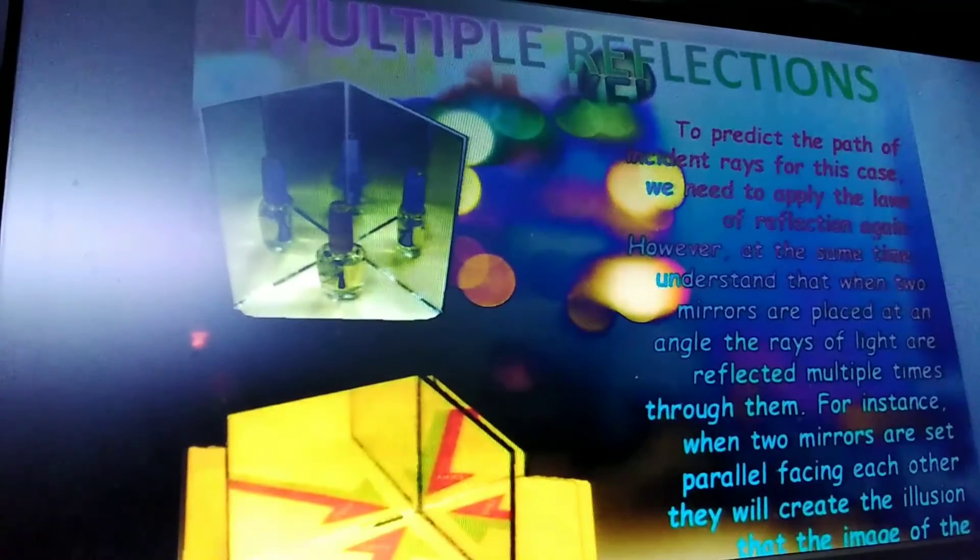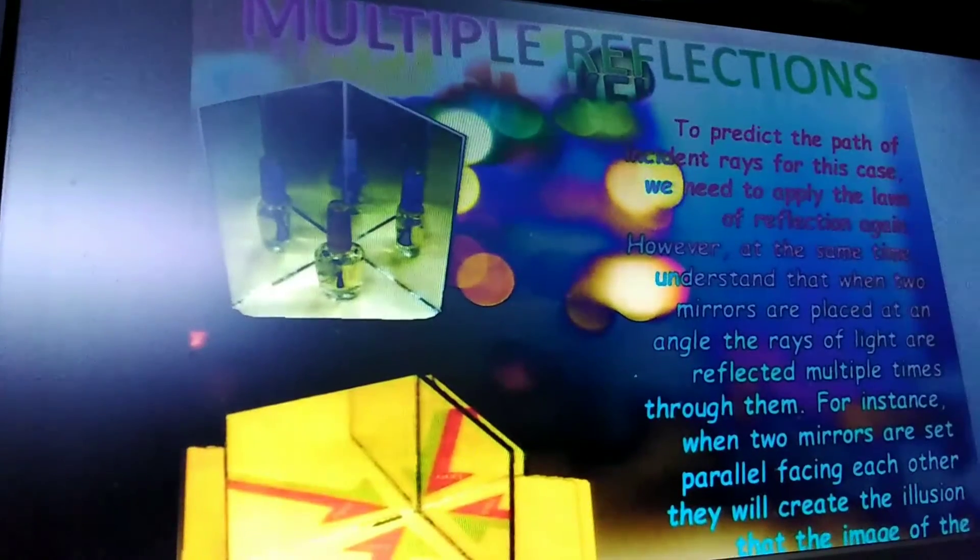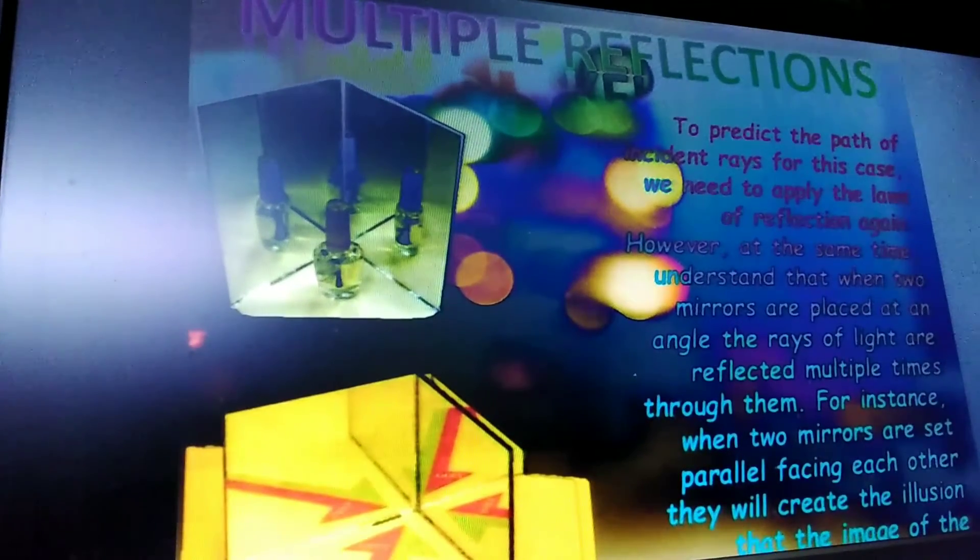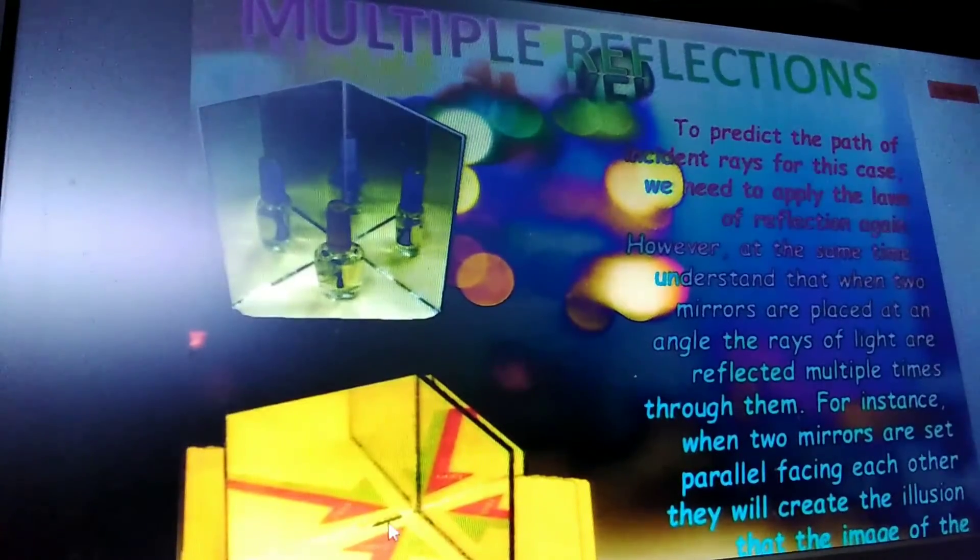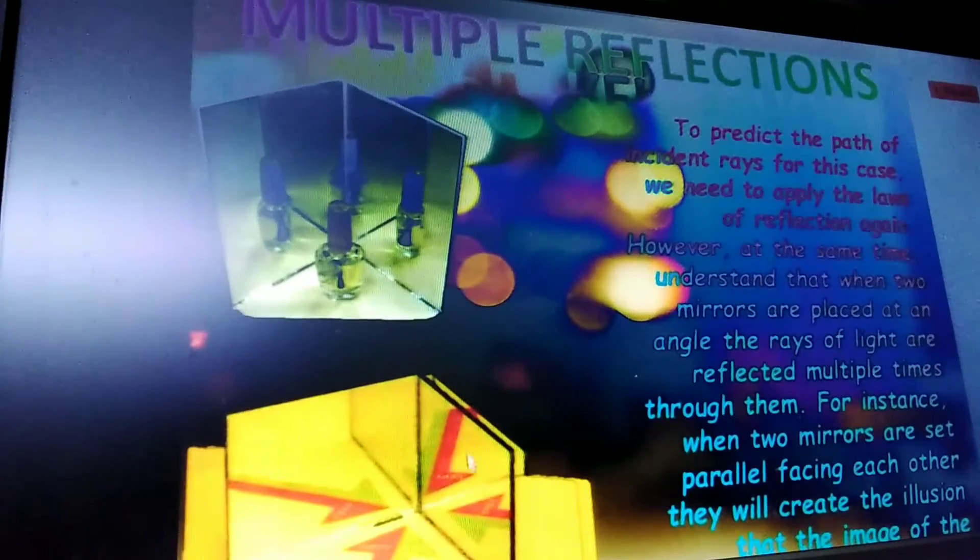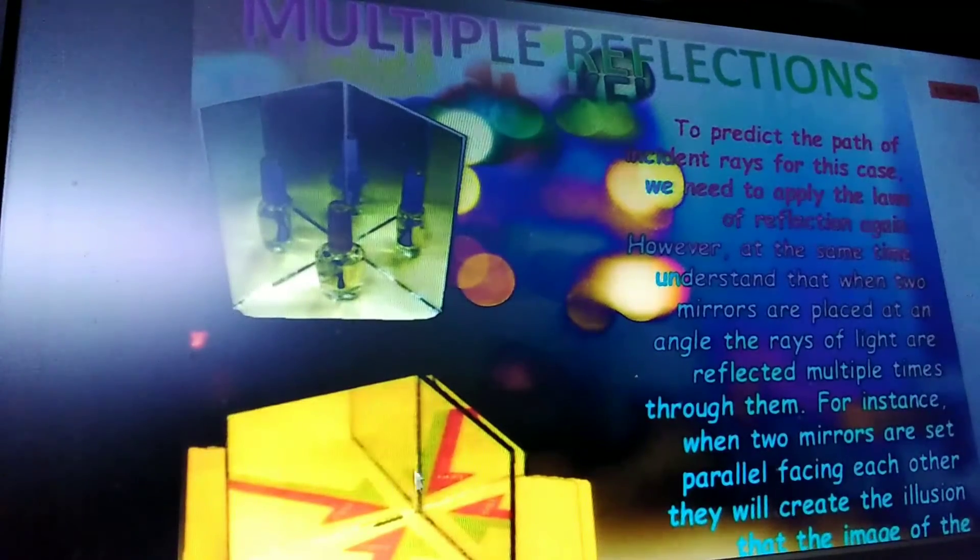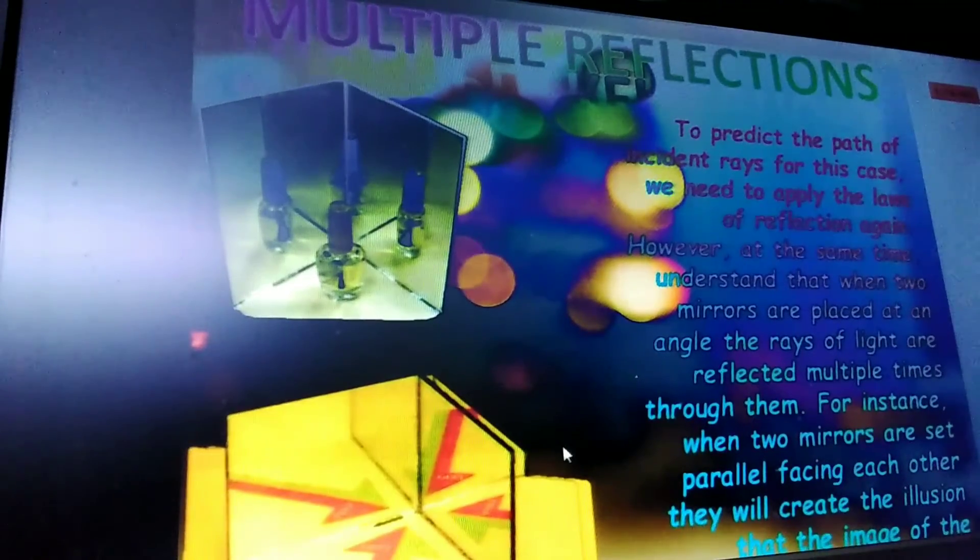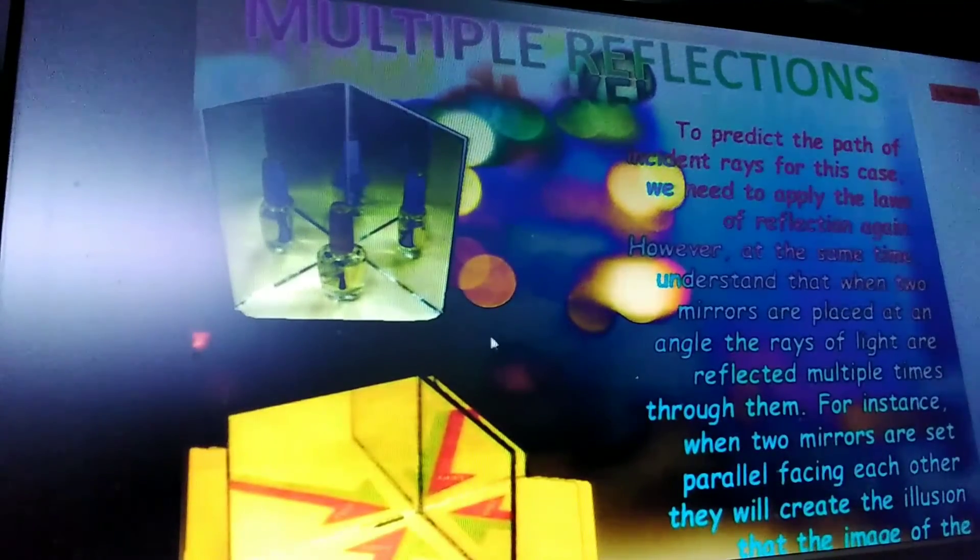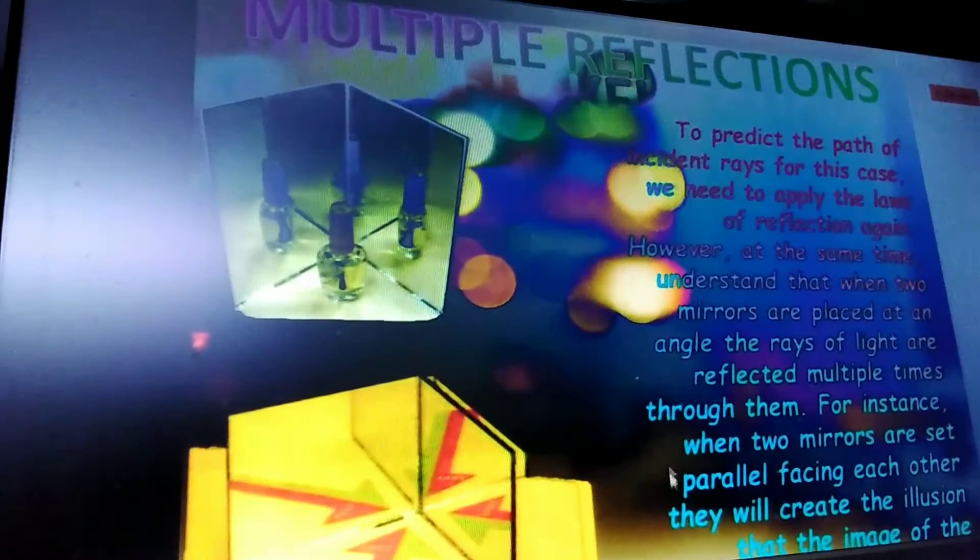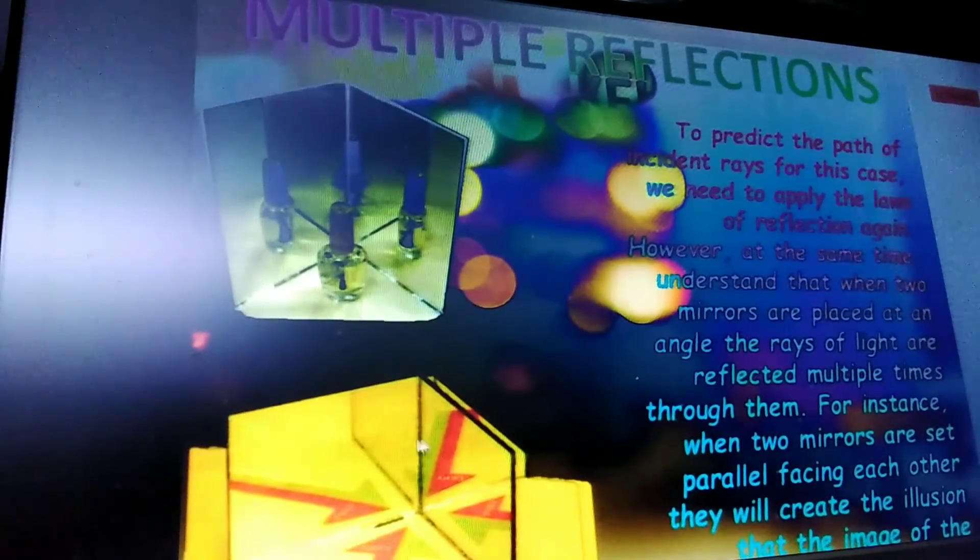For example, if you place two mirrors at an angle between them, the number of images formed is calculated by 360/θ - 1. Suppose the angle is 60 degrees: 360/60 - 1 = 6/2 = 3 images formed.